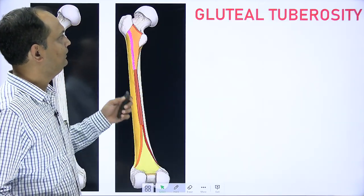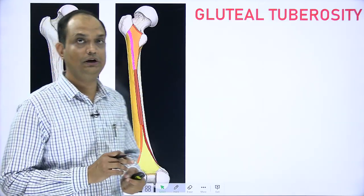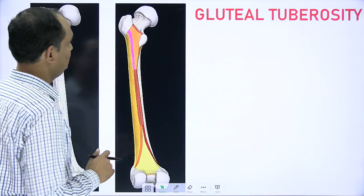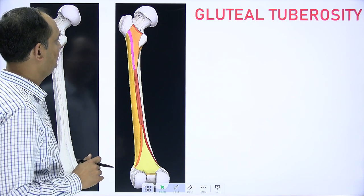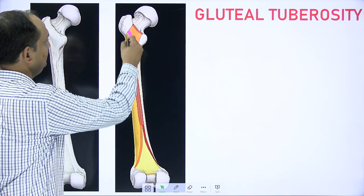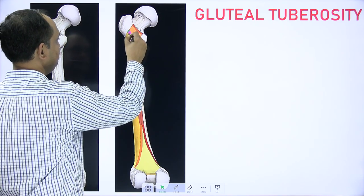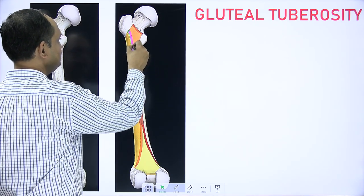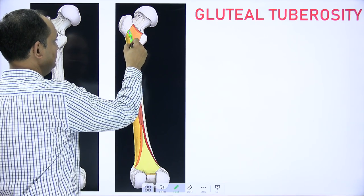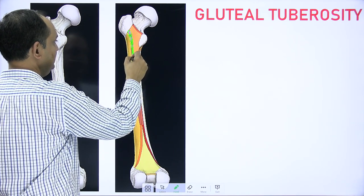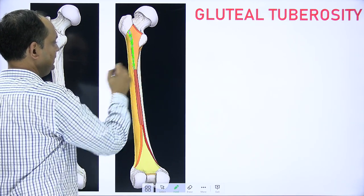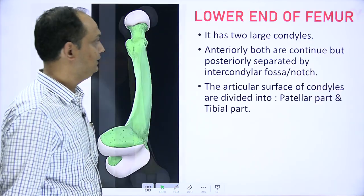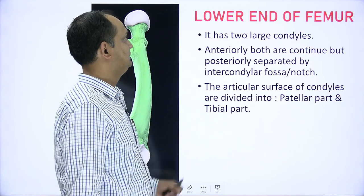The gluteal tuberosity is a feature of the upper part of the posterior surface and gives attachment to the gluteus maximus muscle.